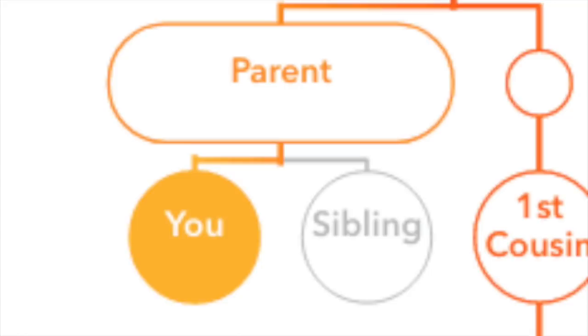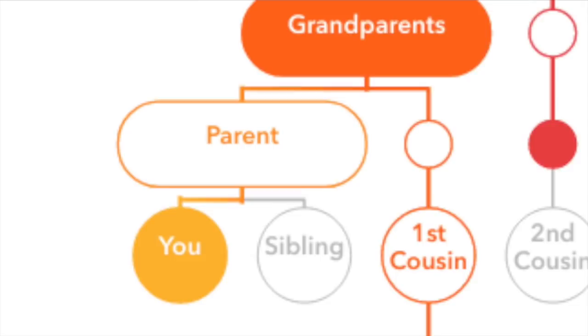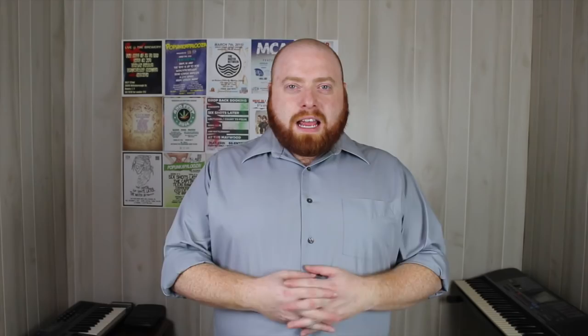The basic idea behind how this works is that if you have a genetic match, the shared DNA between you and your match was inherited from the most recent common ancestors that you both share. So if I do a DNA test and my first cousin does a DNA test, then the DNA that we share was inherited from our shared grandparents.